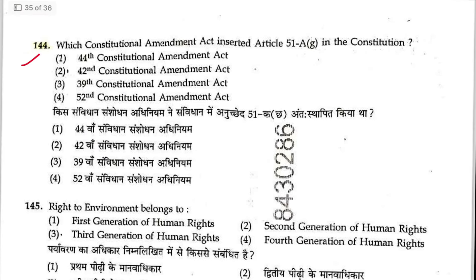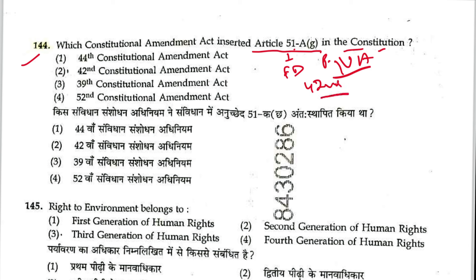Question 144: Which constitutional amendment act inserted Article 51A(g) in the Constitution? Fundamental duties in Part IV-A came by the 42nd Amendment — which originally had 10 duties, A to J. The 11th duty was added by the 86th Amendment. Since 51A(g) is within the original 10 duties, the answer is the 42nd Amendment.